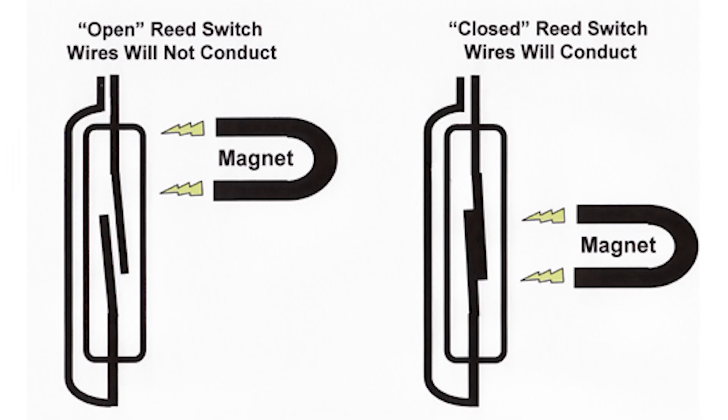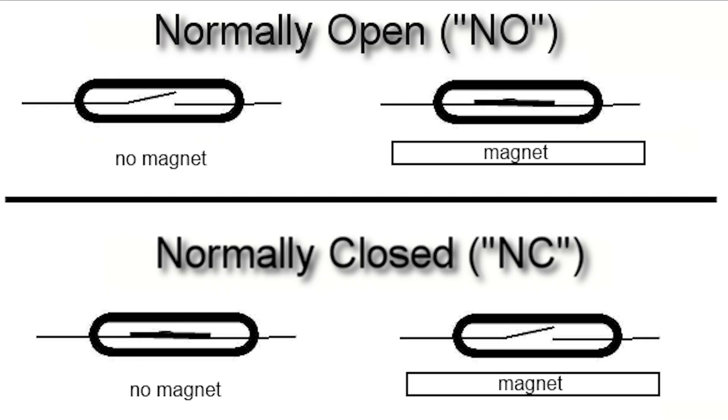A reed switch is a sensor which either opens or closes a circuit in the presence of a magnetic field. Some reed switches are normally open, but they close when a magnetic field attracts one conductive reed to its partner. Other reed switches are normally closed, but they open when a magnetic field repels one conductive reed away from the other.